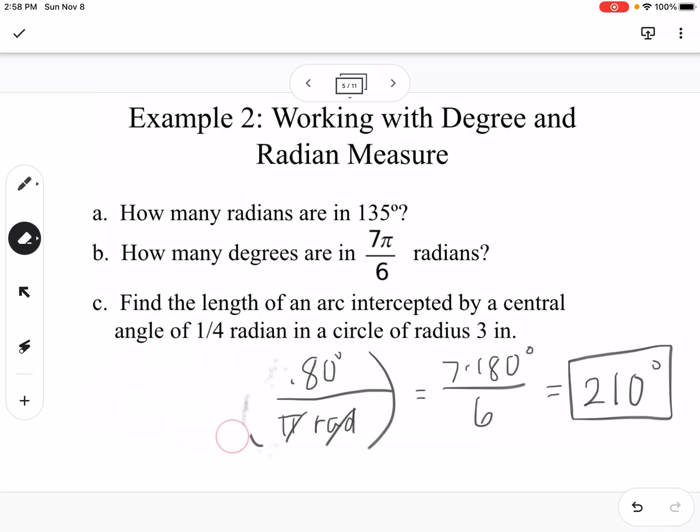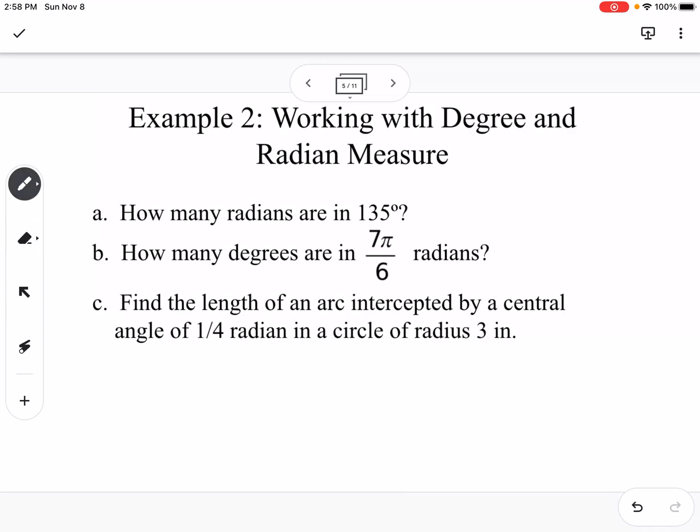Our last example here is to find the length of the intercepted arc, of an arc intercepted by a central angle of 1/4 radian in a circle of radius 3 inches. So remember what we said that a radian measure means that 1 radian is equal to 1 radius. So if we have a radius of 3, that means that 1 radian is also going to be 3 inches. So if we want to know 1/4 of that, we would take 1/4 of 3 inches, and we would get 3/4 inches.